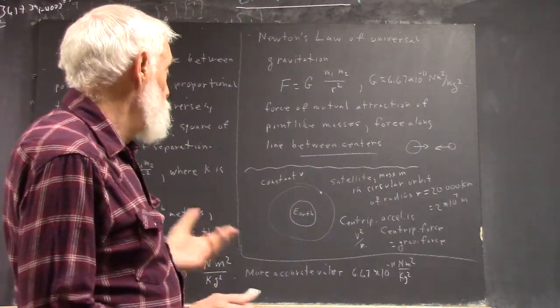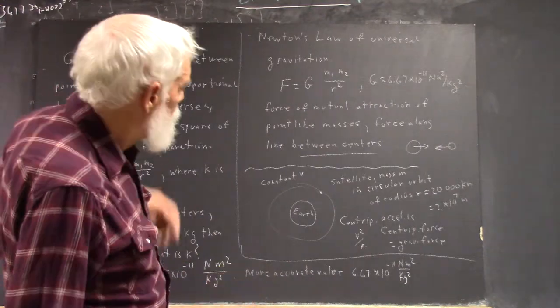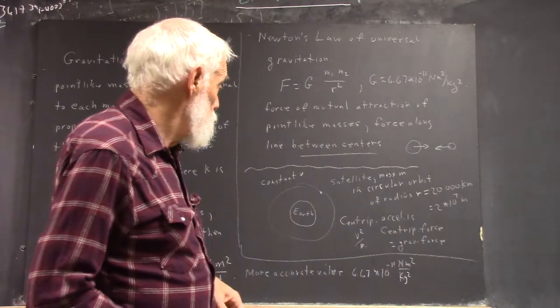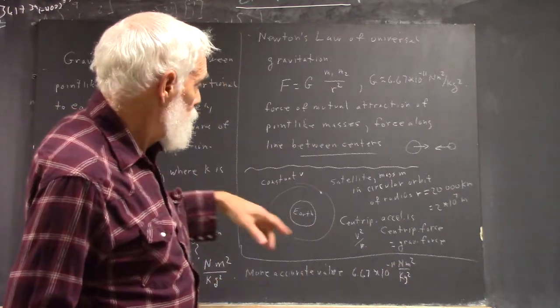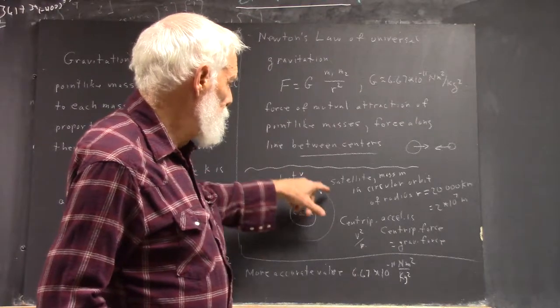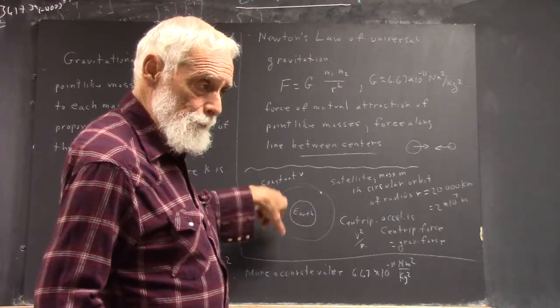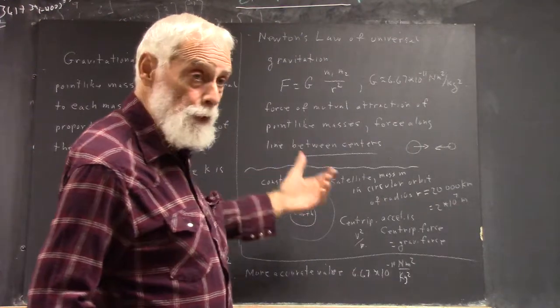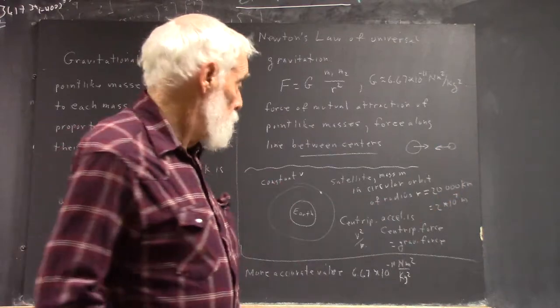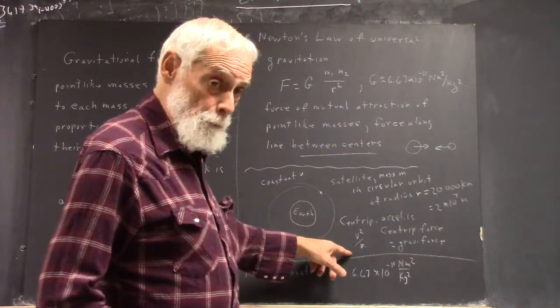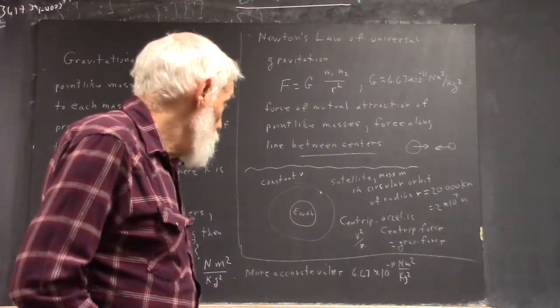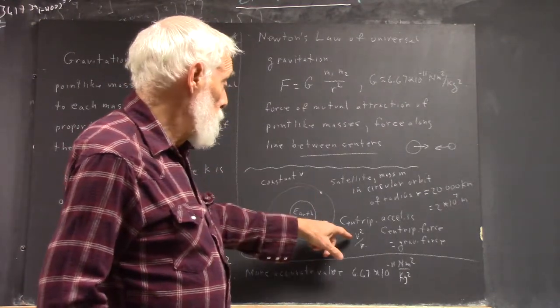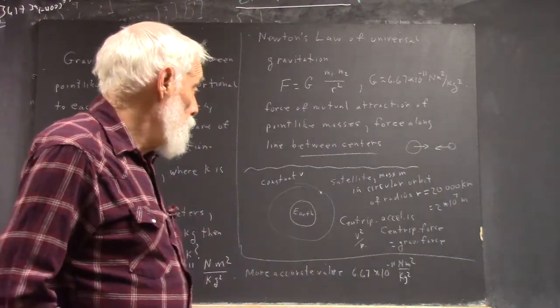So we're going to apply that. Here you've got the Earth, and here you've got a satellite. Now, we're going to say a satellite is at constant velocity in a circular orbit. Now, at constant velocity in a circular orbit, it's going to have a constant centripetal acceleration. The class knew what that was. It's V squared over R. So, whatever the distance of this satellite from the Earth is, the centripetal acceleration has to be V squared over R.